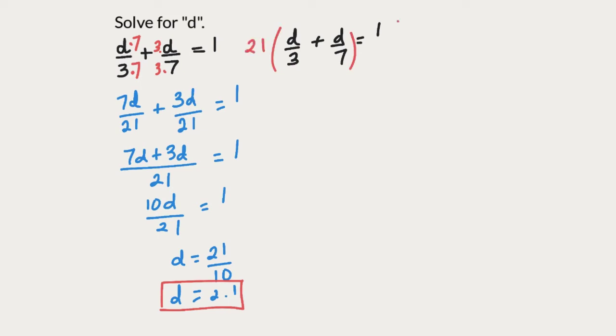Let us multiply both the left hand side and right hand side by 21. We can distribute 21 on the left hand side. One third of 21 gives us 7 and d is also present. One seventh of 21 gives us 3 and d is also present. On the right hand side, we are just left with 21.